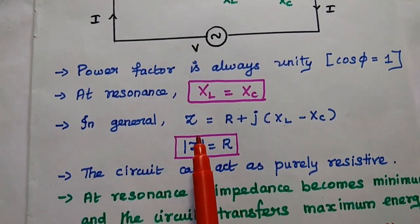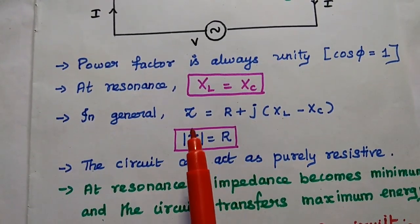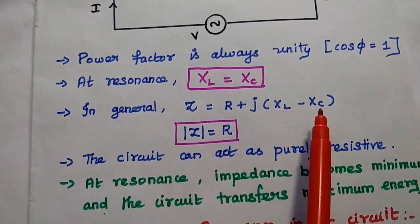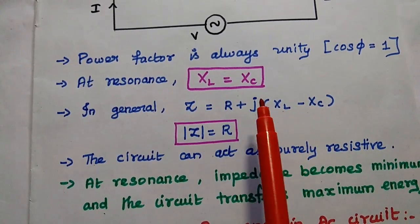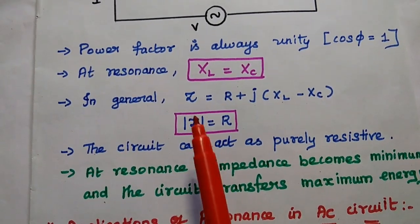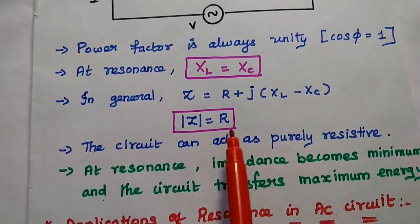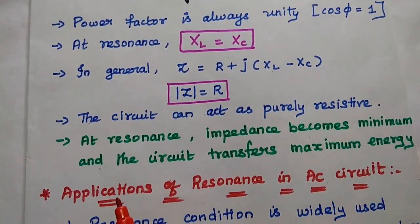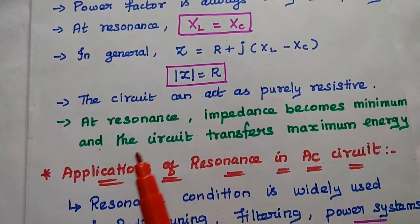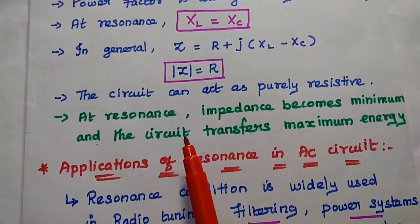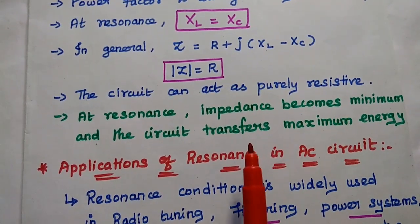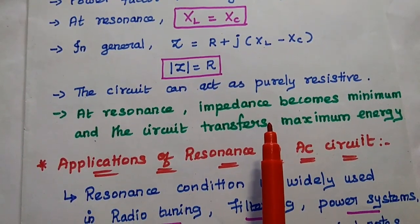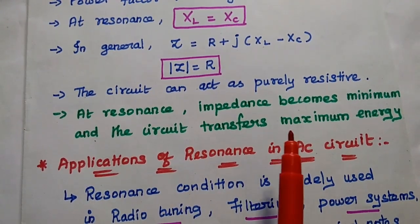For the RLC series circuit, the impedance can be given as Z = R + j(XL − XC). At resonance condition, XL equals XC, so the magnitude of Z equals only the resistance value — the circuit acts as purely resistive. At this resonance condition, the impedance becomes minimum, which means the current is maximum in the circuit. If the current is maximum, then the circuit transfers maximum energy.